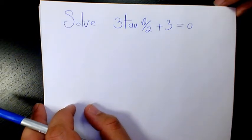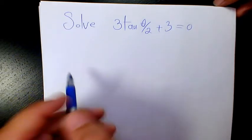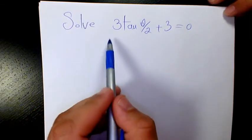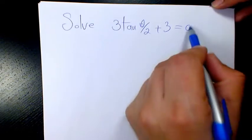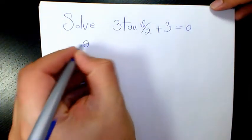What's up guys, this is Massey. Welcome to another video. In this video I want to solve this trigonometric equation which is 3 times tan(θ/2) plus 3 equals 0, and we need to find theta between 0 and 2π.